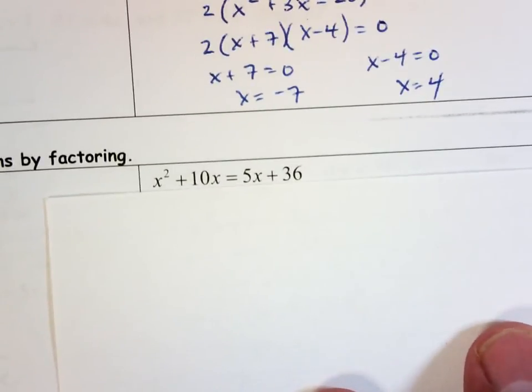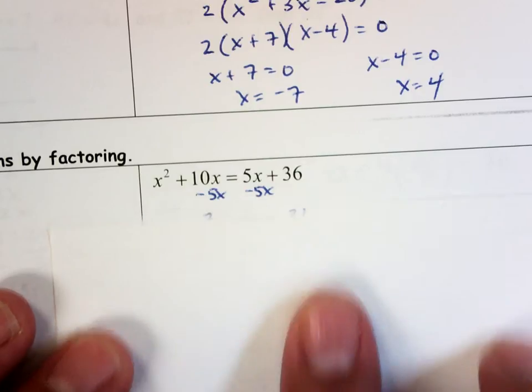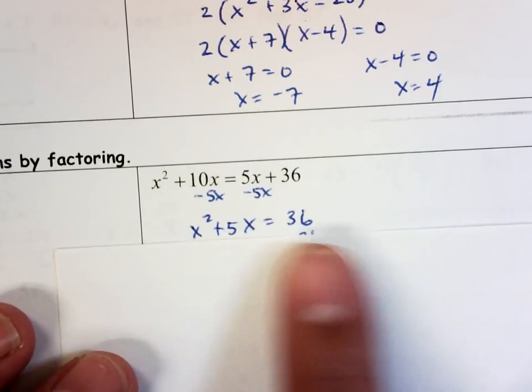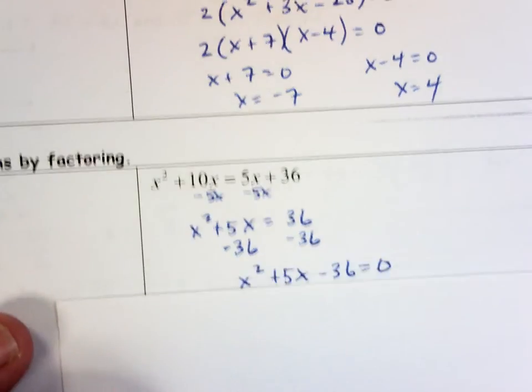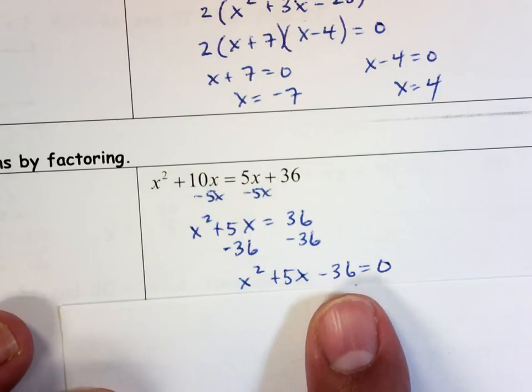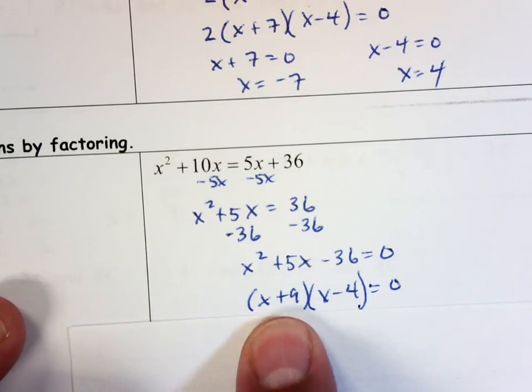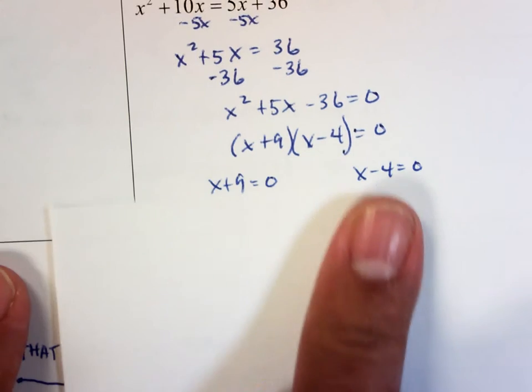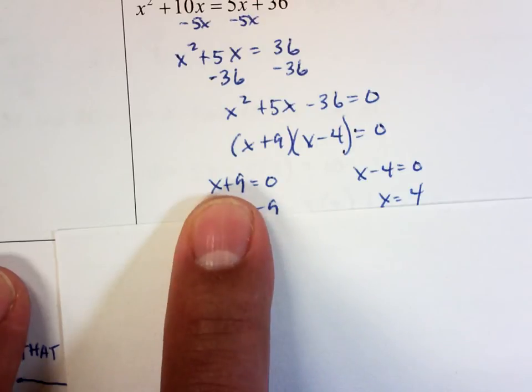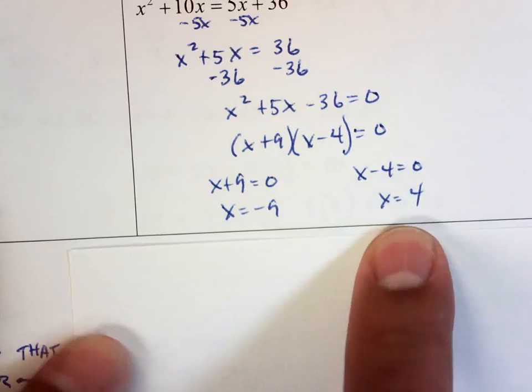x² + 10x = 5x + 36. Again, I need everything on one side. I need 0 on the other. So I subtract 5x from both sides, and I get x² + 5x = 36. Now I move the 36. I could have done it all in one step like I did up here. So I get x² + 5x - 36 = 0. Two numbers multiply together to give me -36 and add up to give me a positive 5. It's a 9 and a -4. So either x + 9 is equal to 0, then x is equal to -9. If it's the x - 4 that's equal to 0, then x must be equal to positive 4.